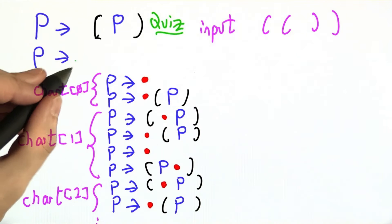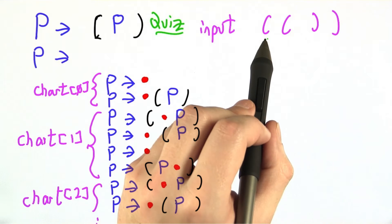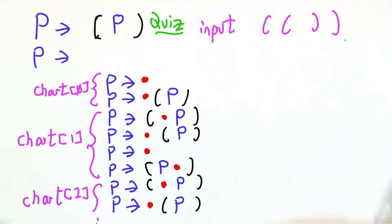P goes to open P close, or P goes to nothing. You could imagine drawing the epsilon there. And our input is the four-character string open, open, close, close.